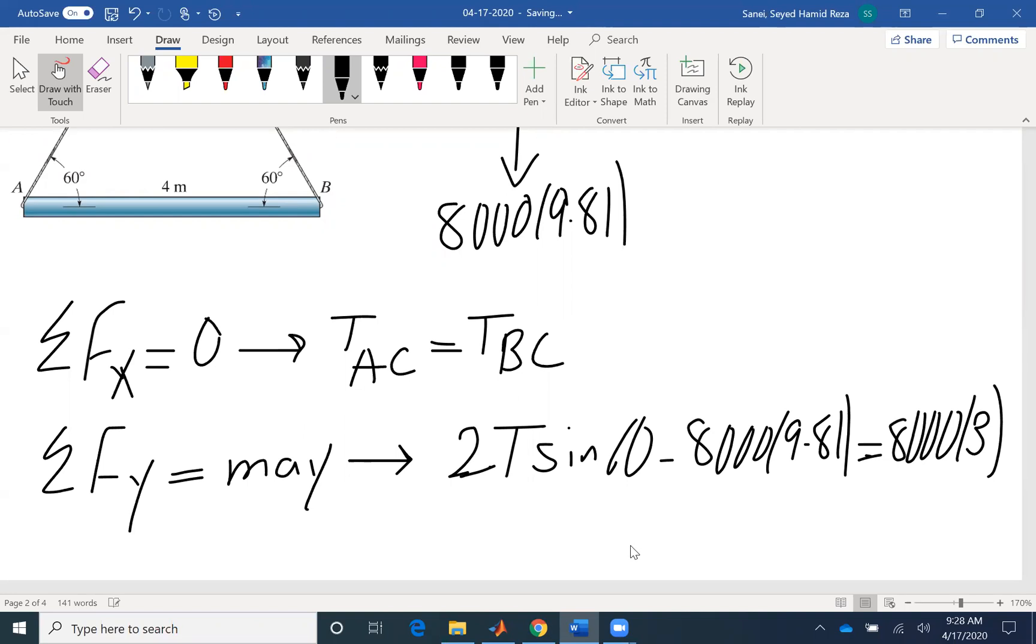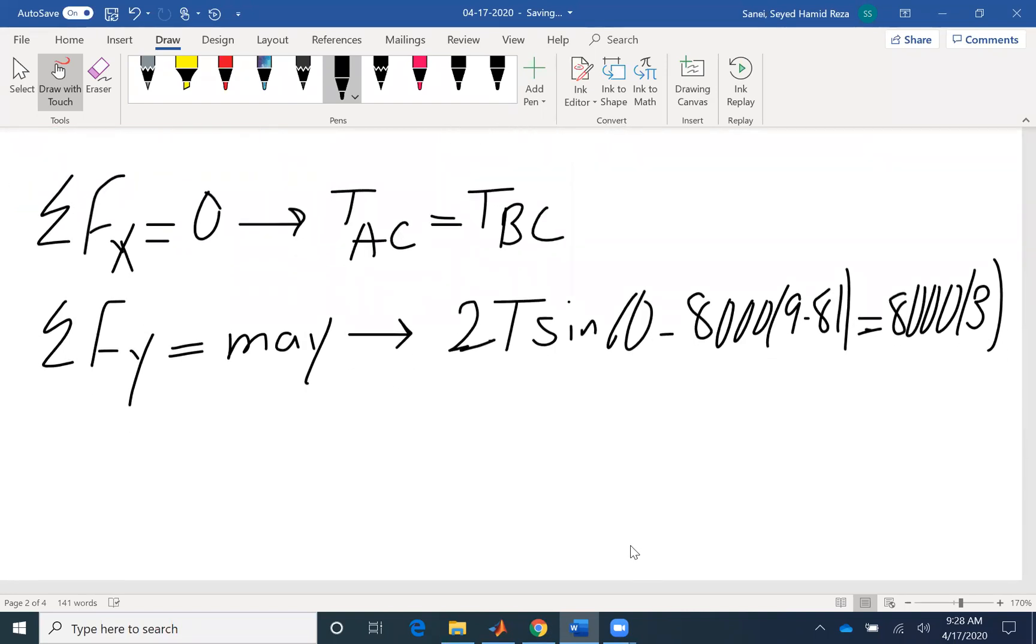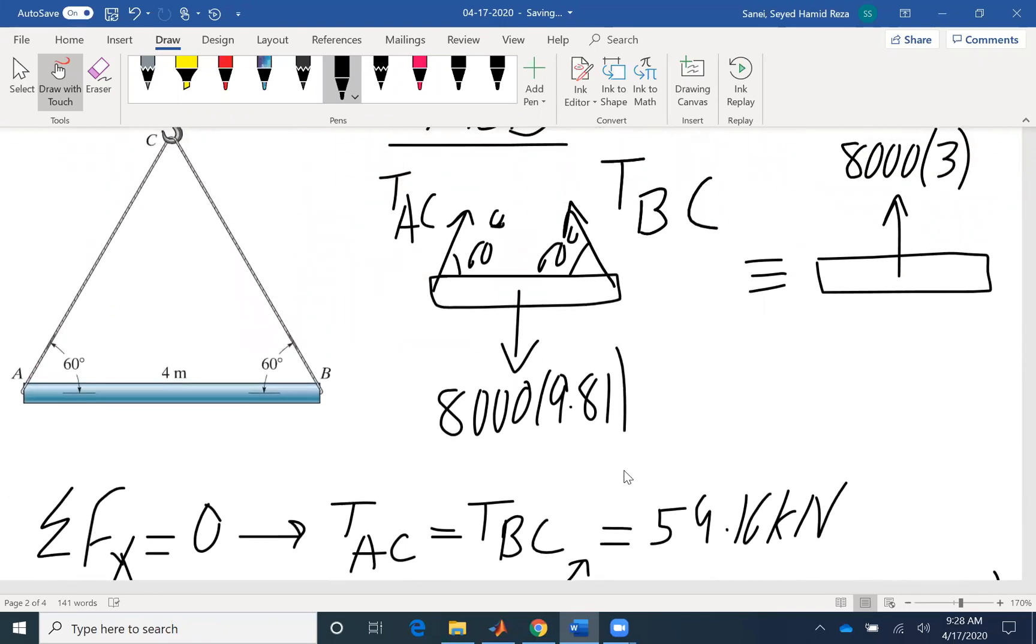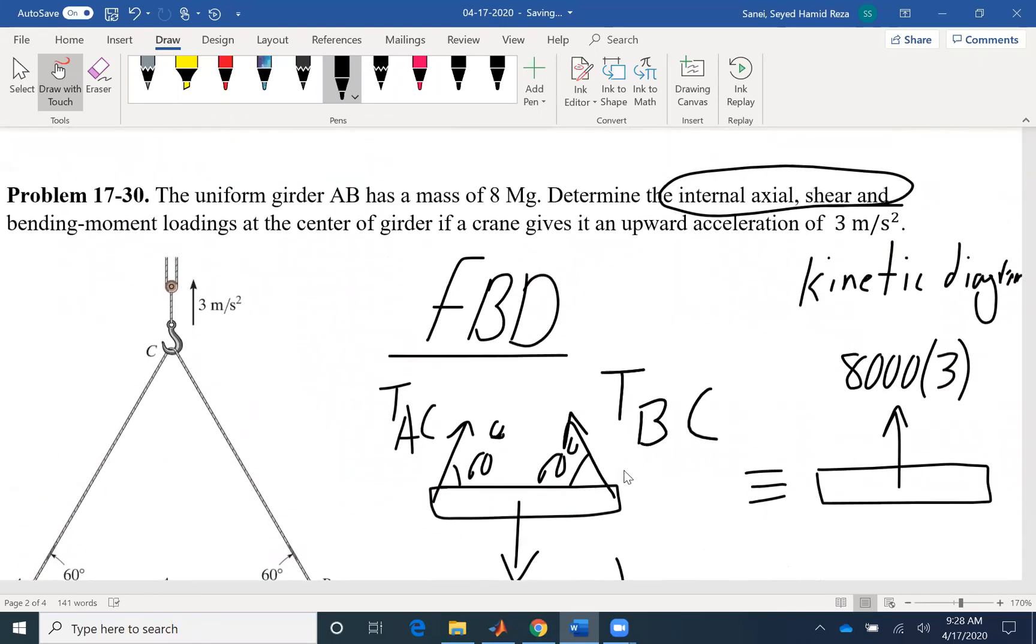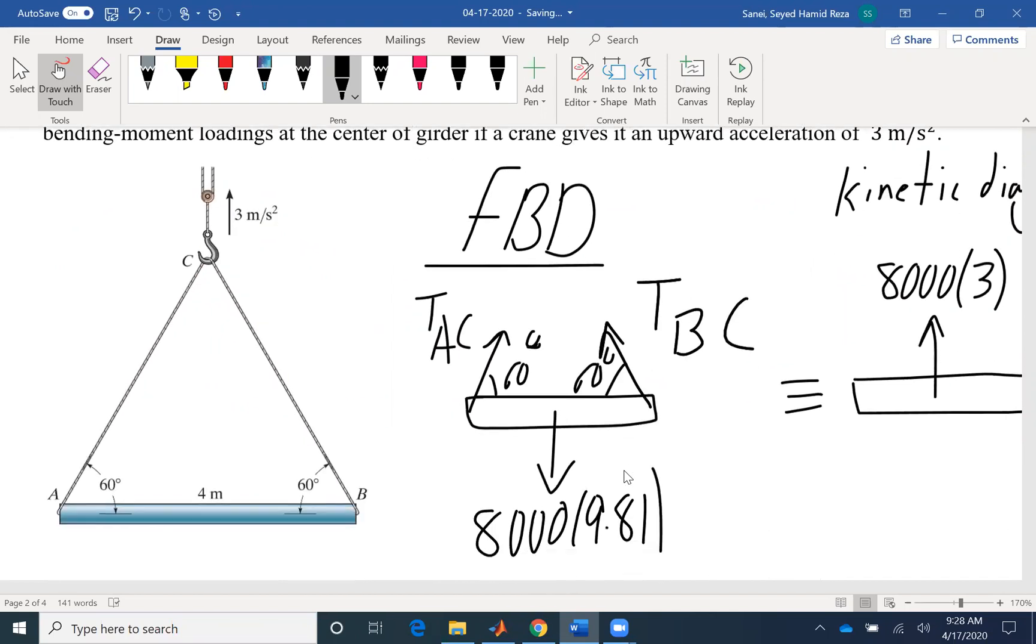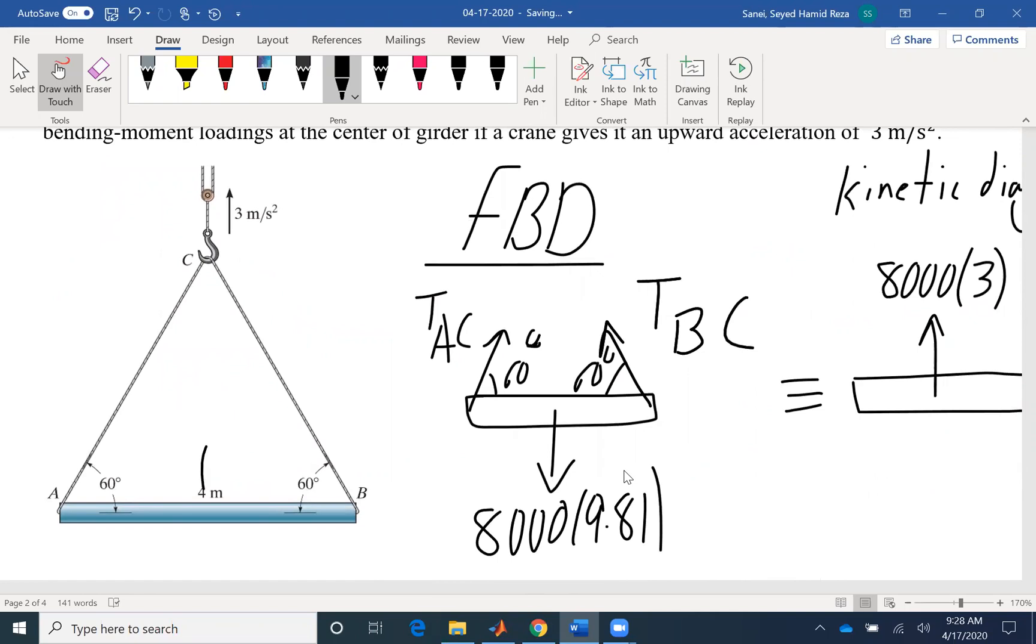The only unknown is T, which we can find T here to be, let me write it here. T can be found here and would be 59.16. So after finding the tension, now I can make a section cut. The question is asking for axial, shear, and bending at the center of the girder here. I need to make a section cut.